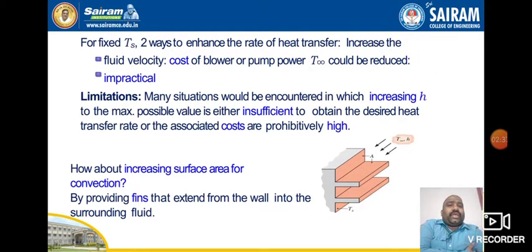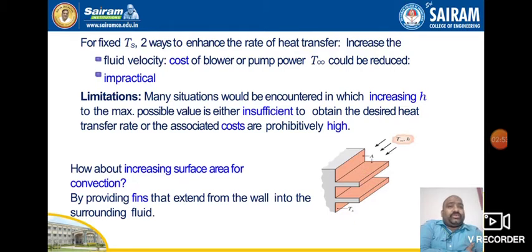For a fixed surface temperature, there are two ways to enhance the rate of heat transfer. If you want to increase the fluid velocity, the cost of the blower or pump — the power required — is high. So T∞ could be reduced, but this requires additional energy sources to increase the rate of cooling.